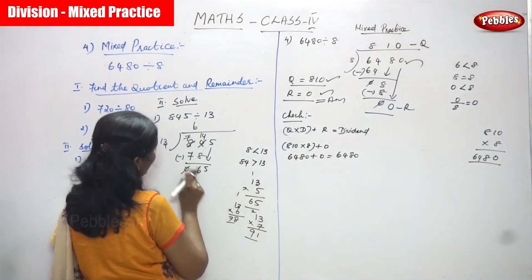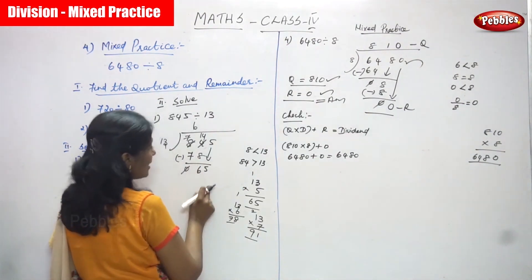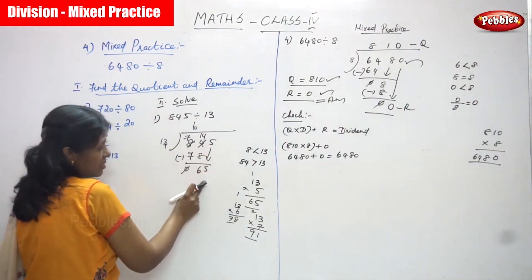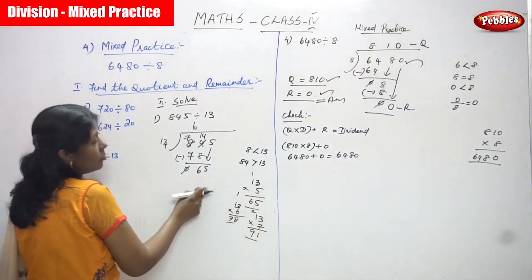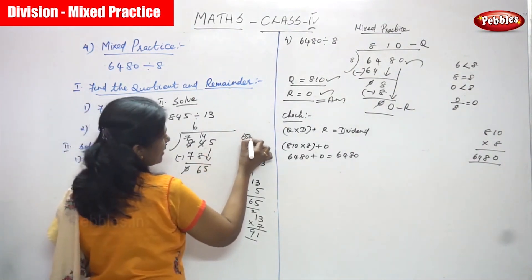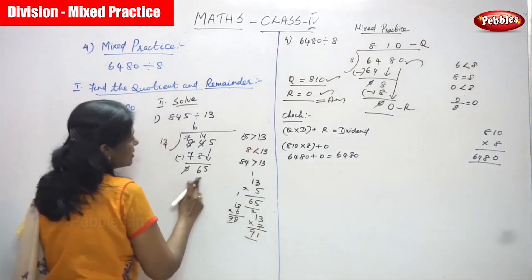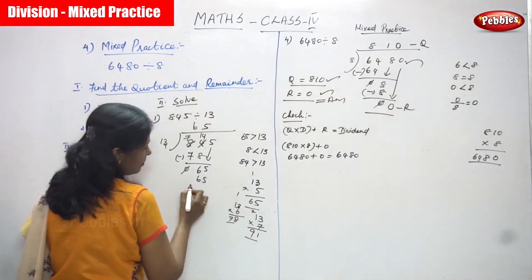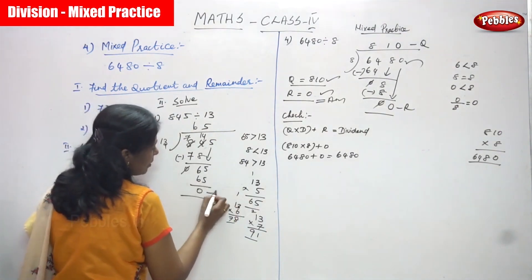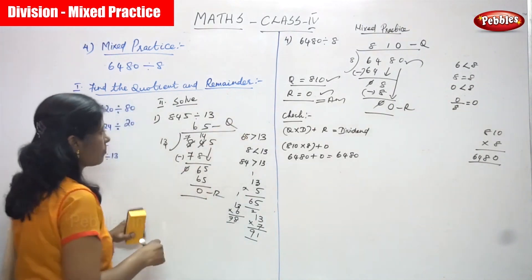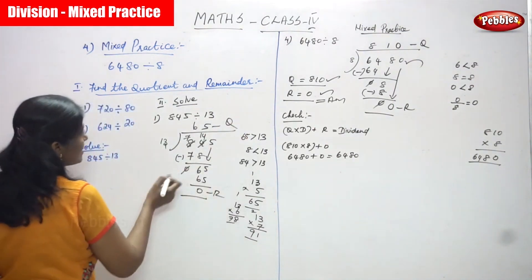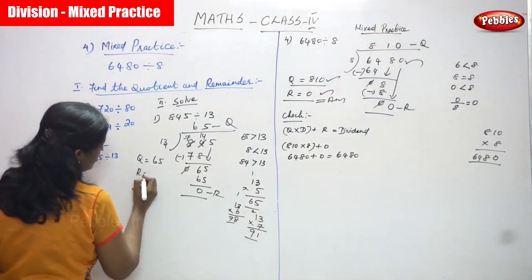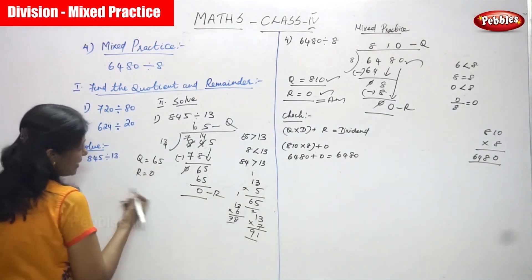Now the number is 65. Compare 6 with 13 — 6 is less than 13, so bring down the next digit. 65 is greater than 13. How many times does 13 go into 65? That is 5 times — already multiplied and shown. So this is the remainder, which is 0, and this is the quotient, which is 65. The answer is quotient equals 65 and remainder equals 0. Then you have to do the check.